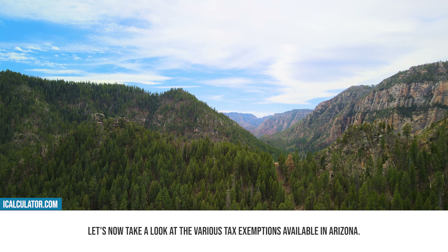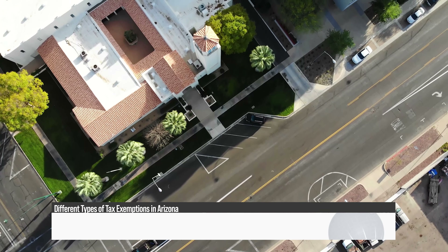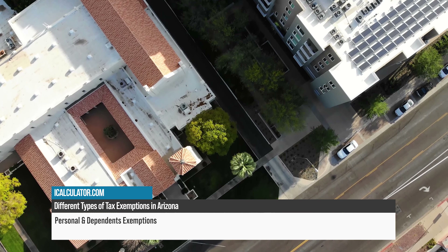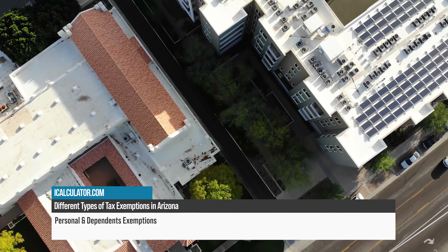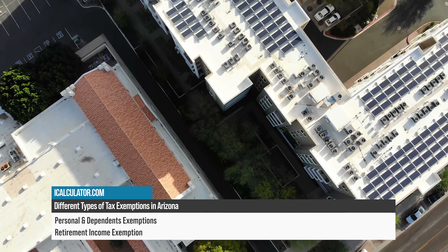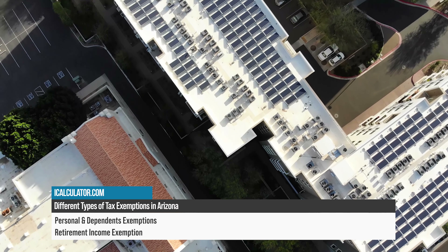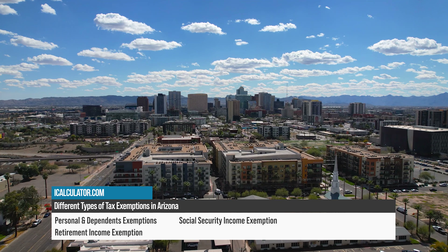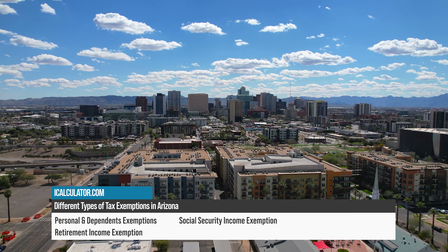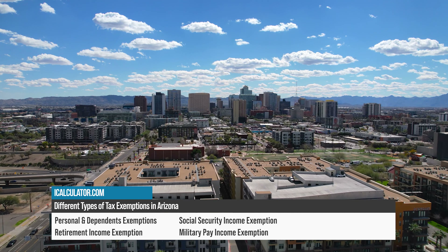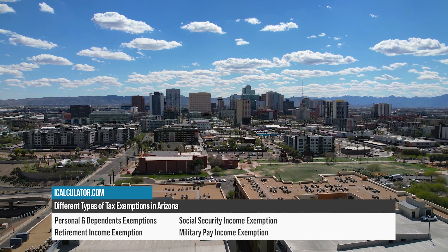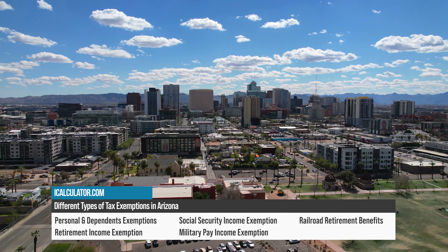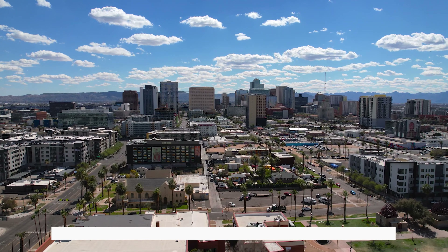Now we have covered the different types of taxes in detail. Let's take a look at the various tax exemptions available in Arizona. These include personal and dependent exemptions, which allow taxpayers to reduce their taxable income for themselves and their dependents; retirement income exemptions applying to pensions, IRA and 401k distributions, and Social Security; Social Security income exemptions; military pay income exemptions for active duty military personnel and veterans; and railroad retirement benefits exemptions for railroad workers and their spouses.